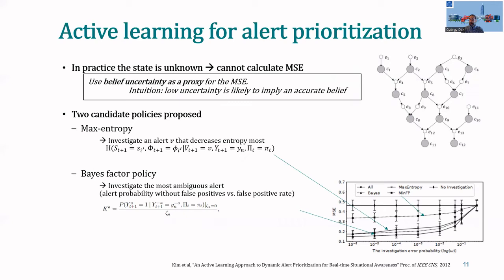What is difficult about this problem is that, in practice, the state is unknown, it cannot be observed, and hence the defender cannot calculate its estimation error. So what we propose is to use the uncertainty of the belief as a proxy for minimizing this estimation error. The intuition here is that a low uncertainty will likely lead to an accurate belief. We propose two candidates for choosing what to investigate. The first policy, which we call the max entropy policy, investigates an alert that decreases the entropy most.